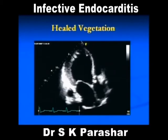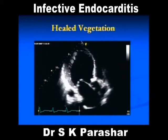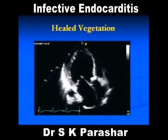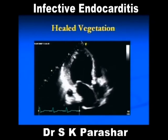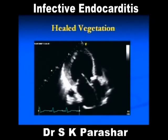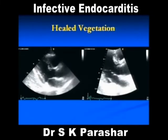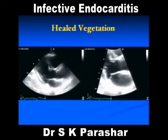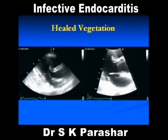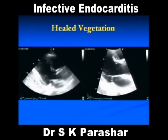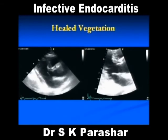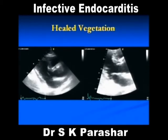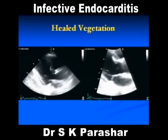This healed vegetation was shown earlier. Number one: it is less mobile. Number two: it is very echogenic, and the patient did not have any fever. This patient is a doctor we have been following for the last 2 years. He came with an active vegetation and fever, was treated, and now it is still persisting but he is perfectly healthy. That means previous history is very important, current history is very important, and the pattern of the vegetation.